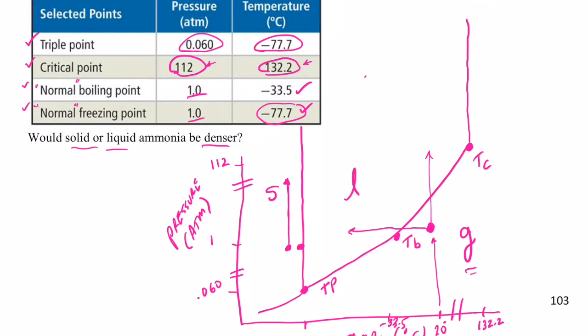So if I have NH3 solid to NH3 liquid, which of these would be denser? Well, when I increase the pressure, it stays the solid. So the solid must have the smaller volume than the liquid. Because when I increase the pressure, it's going to go to the smaller volume, which must be the solid. So the smaller volume for the same mass would mean that the solid has the greater density. So solid ammonia would sink in liquid ammonia.